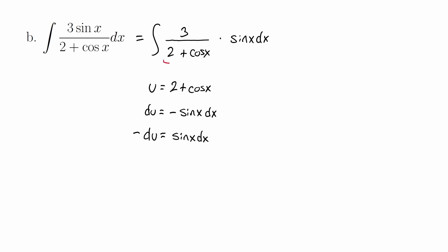If you go ahead and convert everything, this fraction is going to convert to 3 divided by u, and sine of x dx converts to negative du. So if we put this all together, we get as our integral negative 3 over u du.